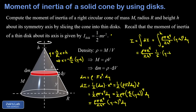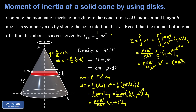The antiderivative of (y minus h)⁴ is one fifth times (y minus h)⁵, evaluated from y equals zero to y equals h. At the upper limit, substituting y equals h gives zero. Subtracting the lower limit, substituting y equals zero gives negative h⁵, but since we're subtracting that, we end up with positive h⁵. Combining constants, we get rho·pi·R⁴ over 10h⁴ times h⁵, and four factors of h cancel, leaving a moment of inertia of rho·pi·R⁴·h divided by 10.